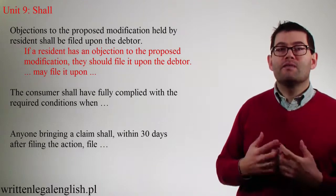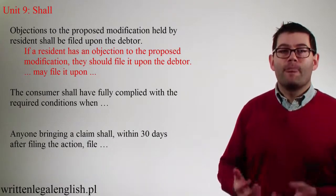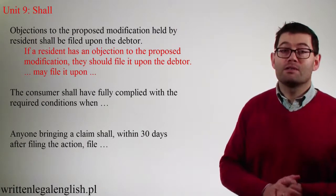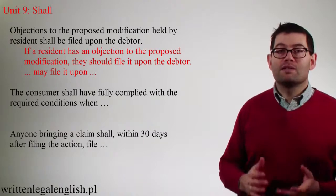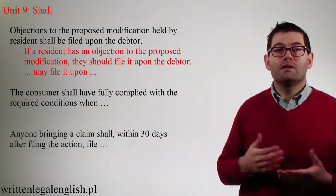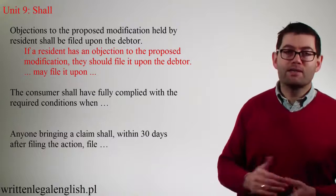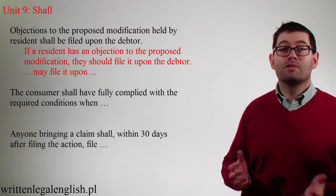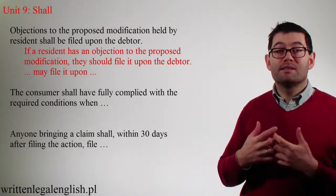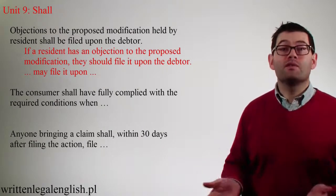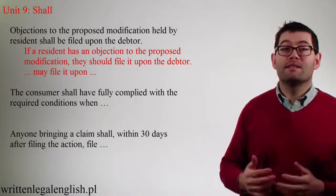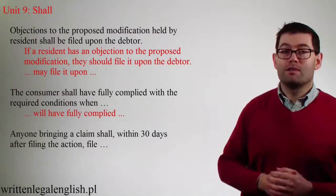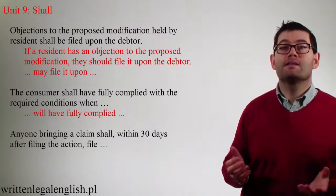'The consumer shall have fully complied with the required conditions when...' Another way to work out what shall could mean is to go through the definitions. Does shall mean must or have a duty to here? No. Does shall mean should or be directory here? No. Does shall in this case give permission? No. What this sentence does do is talk about the future — when something is done, at some future event. When the consumer will have complied with the required conditions. Here, the answer is will.